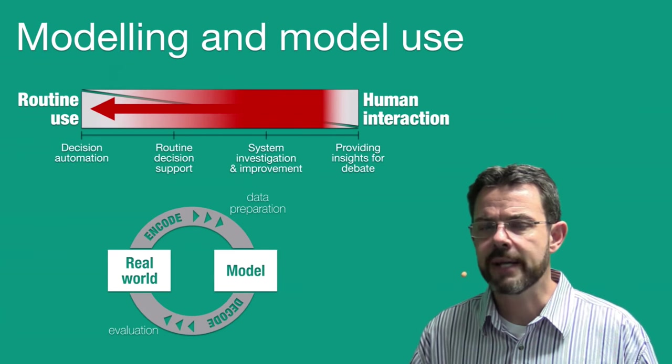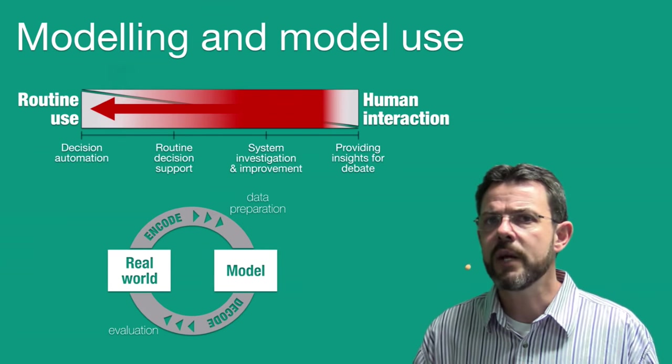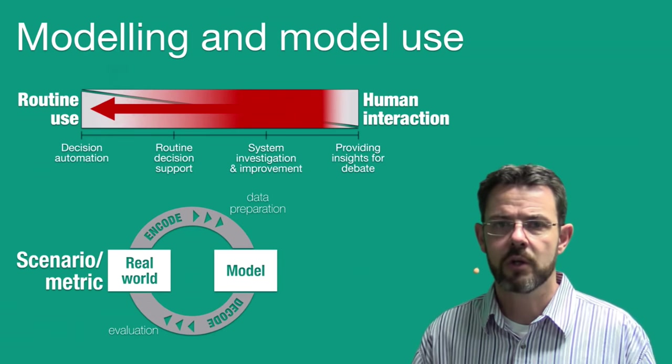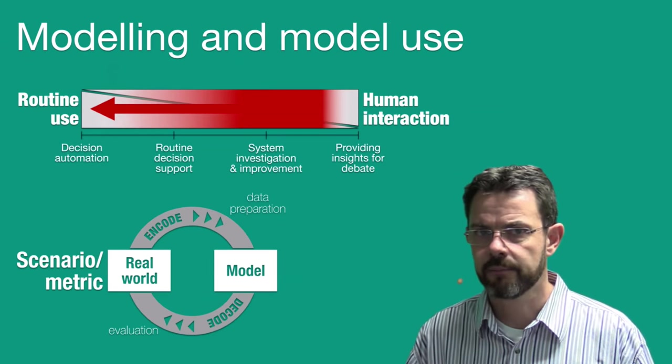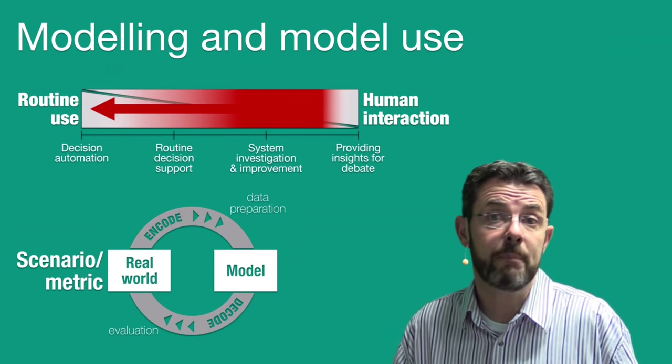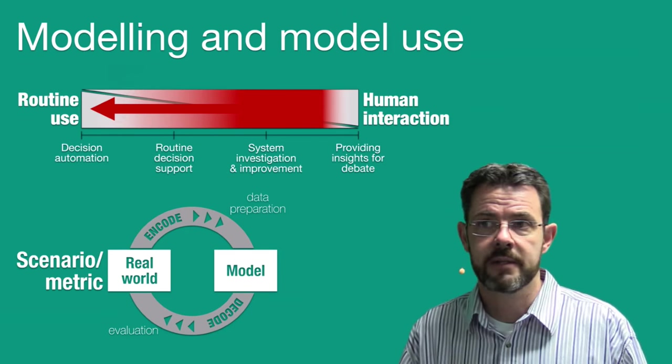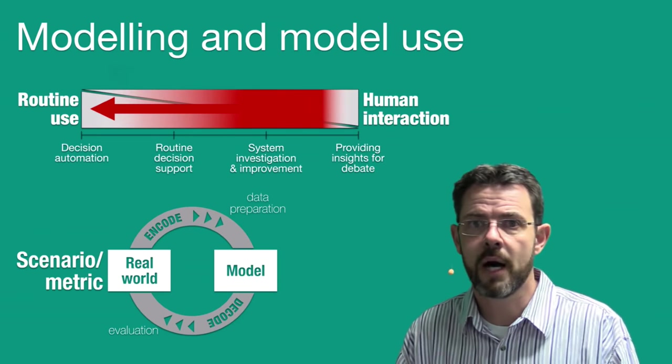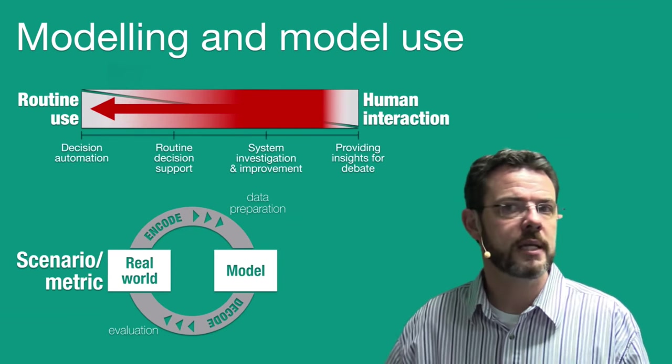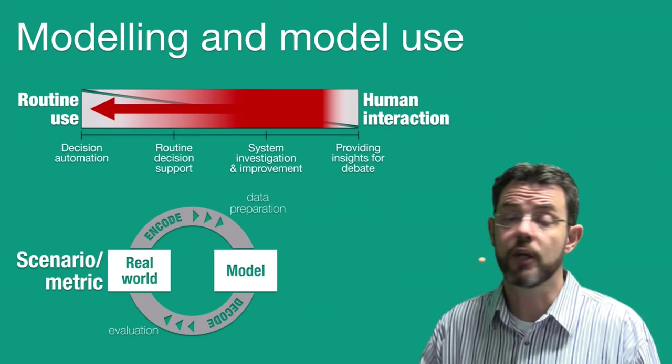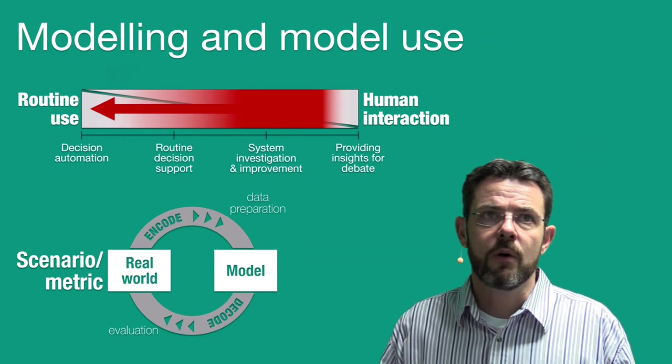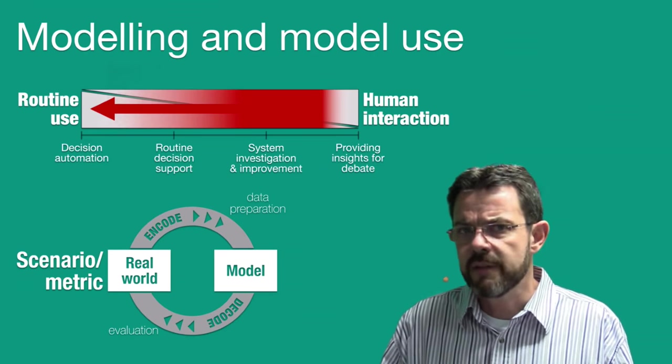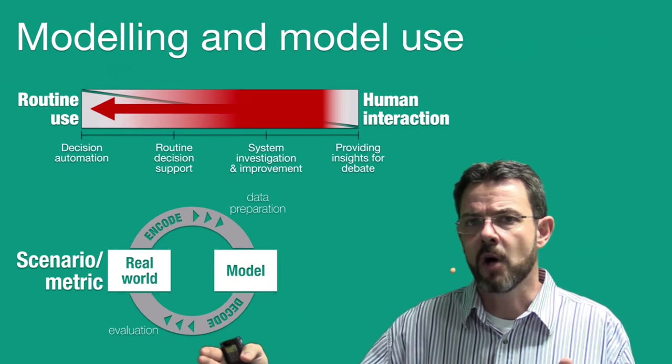Now, here what is very important to actually note is that the real world need to be approached with a specific scenario in mind or a specific metric. And sometimes these metrics are competing and multiple. Somebody wants to minimize risk while somebody else wants to maximize profit. And the union wants to minimize the number of people that gets laid off.